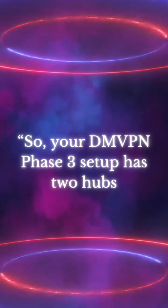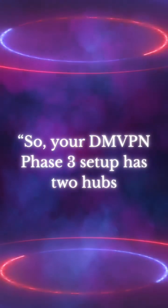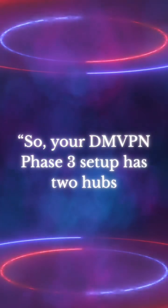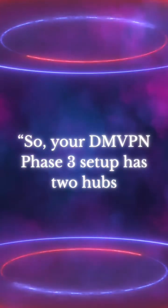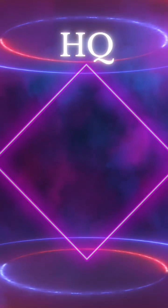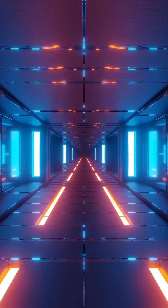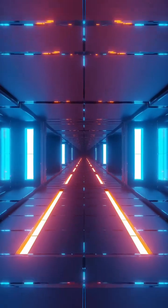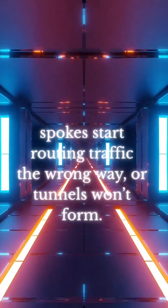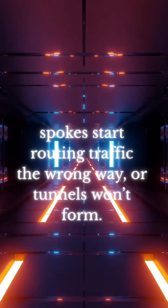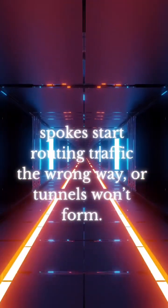Your DMVPN Phase 3 setup has two hubs — one at HQ, another at your DR site — and suddenly the spokes start routing traffic the wrong way, or tunnels won't form.